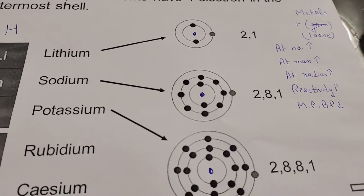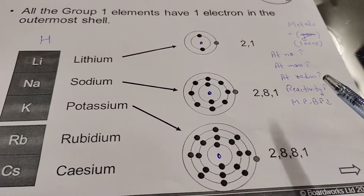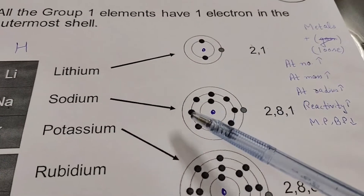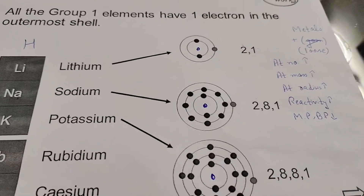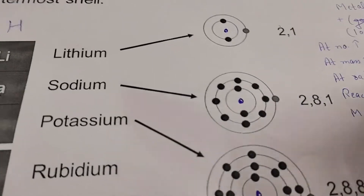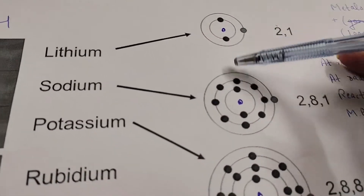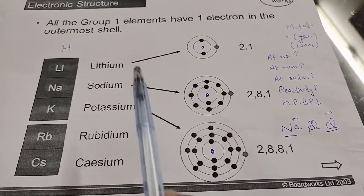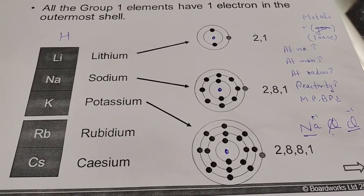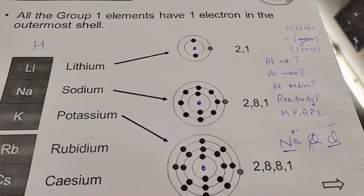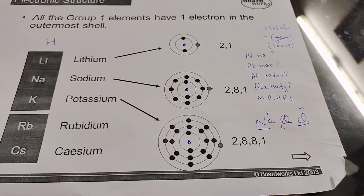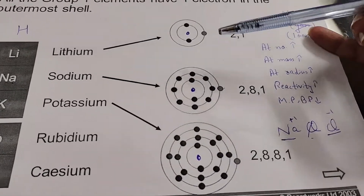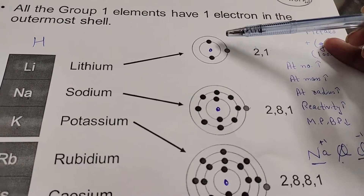Reactivity also increases when moving downwards in group one. The reason is that the force of attraction between the nucleus and the outermost shell decreases because atomic radius increases. This means potassium is more reactive compared to sodium and lithium. The reason is the distance between the nucleus and the valence shell.